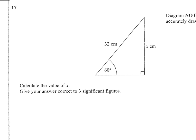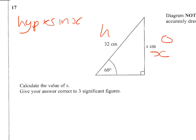There are a number of ways you can do this question. You should realise you've got the hypotenuse and you've got the opposite in a right-angled triangle. So you're trying to find the opposite side, and you might well know that hypotenuse times sine of the angle will equal the opposite side.